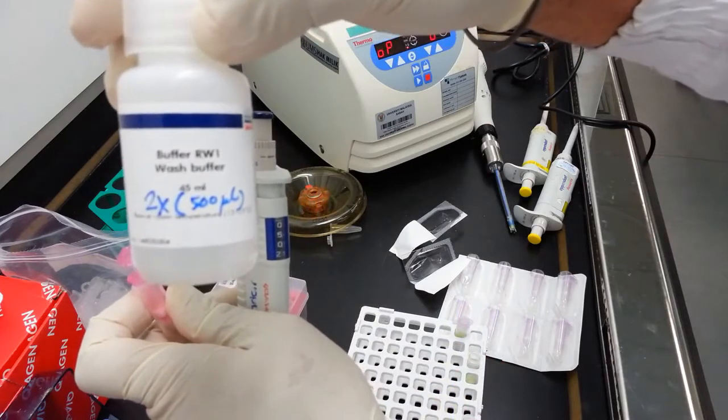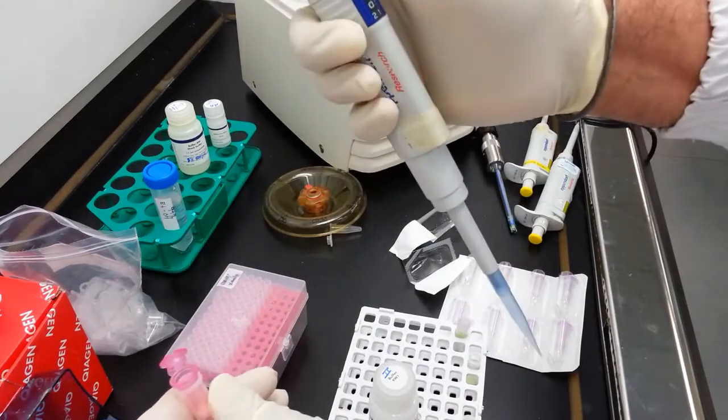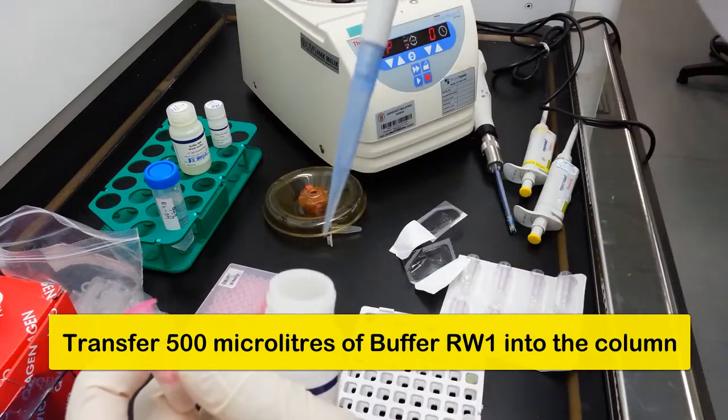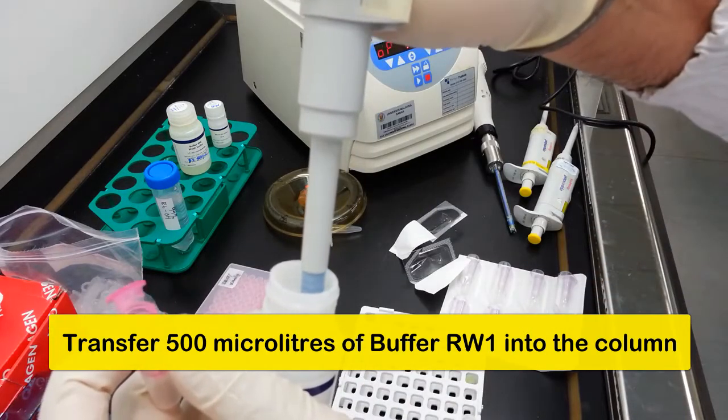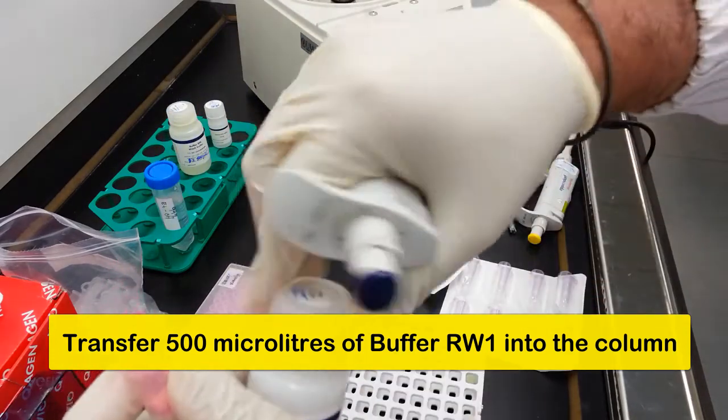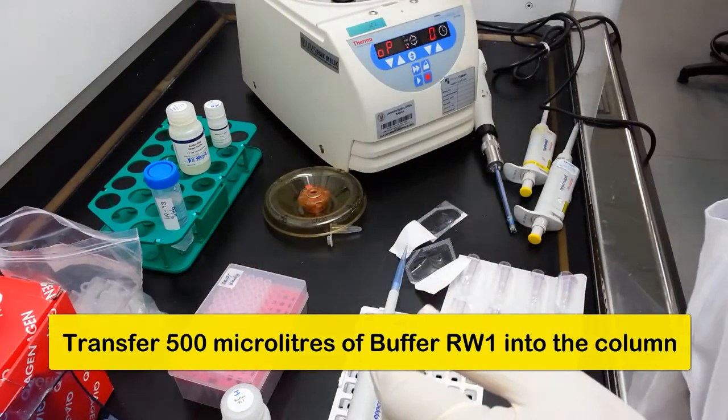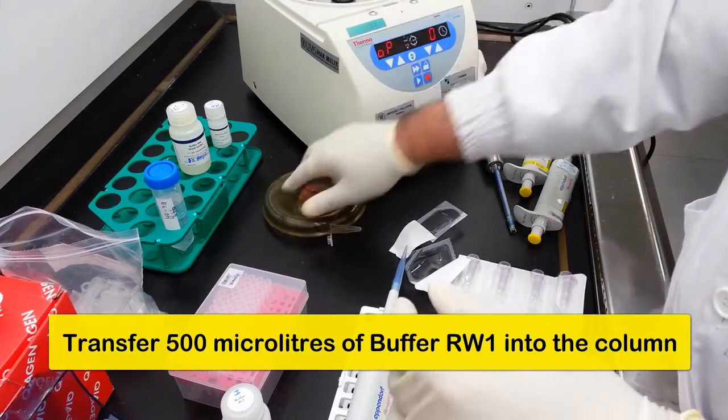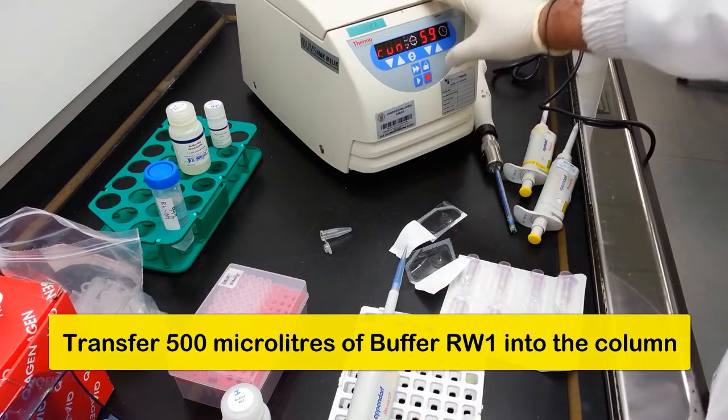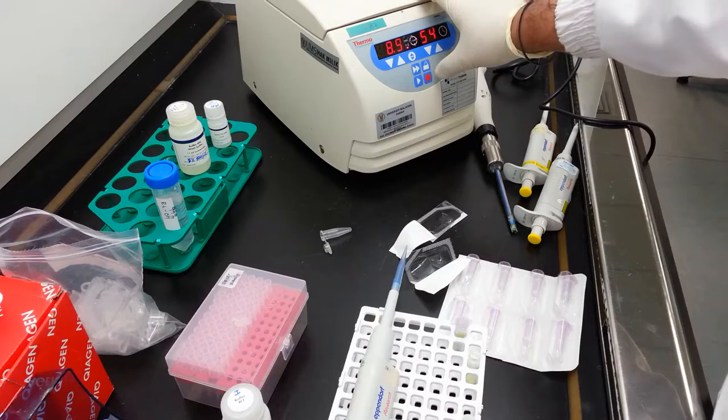This is buffer RW1, you need to transfer 500 microliters of buffer RW1 into the upper section of this tube. Spin down briefly for 15 seconds at 13,000 G.